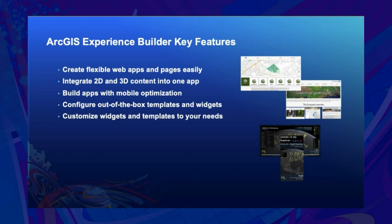The second is 2D and 3D integration. It is not only about displaying 2D and 3D maps in one application, but also widgets like filter and list work with scene layers in the same way as they do with feature layers. Third is Mobile Optimization — you can configure apps displaying on mobile differently from those on desktop, with one URL. Next is a rich set of widgets and templates ready for you to use.